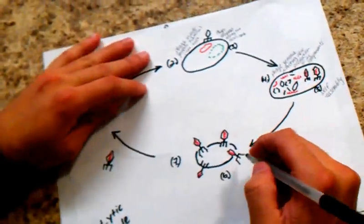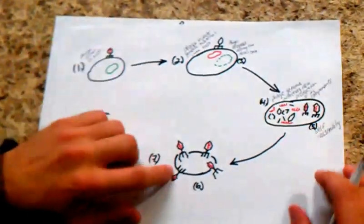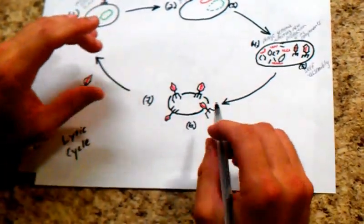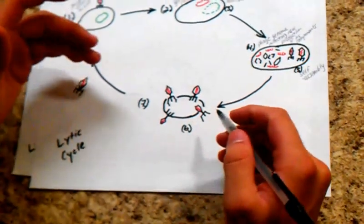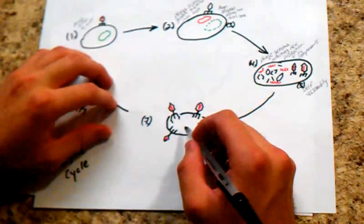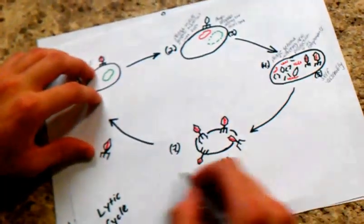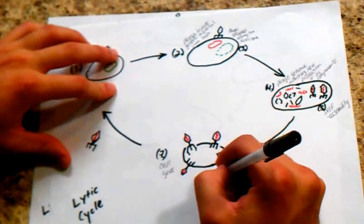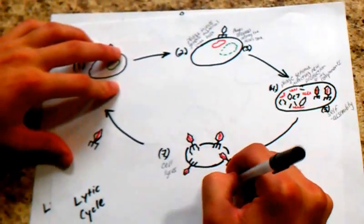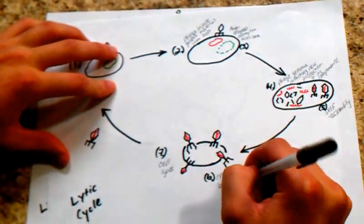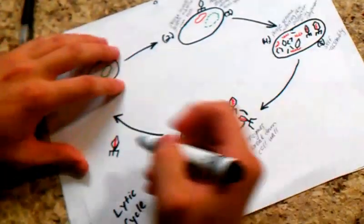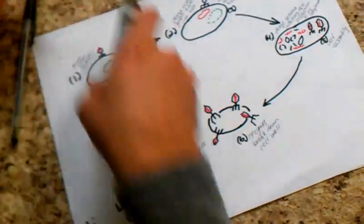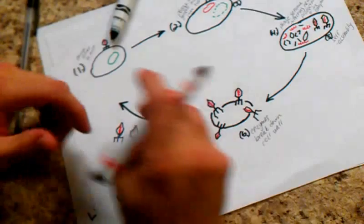In the next phase, the enzymes are breaking up and digesting the bacterial cell wall. The cell begins lysis, and then it releases the new phages.